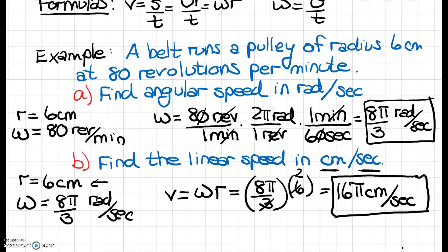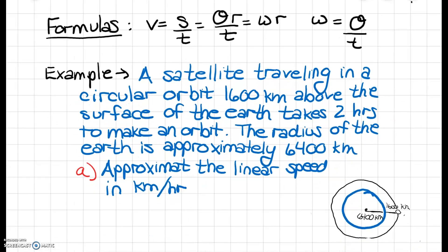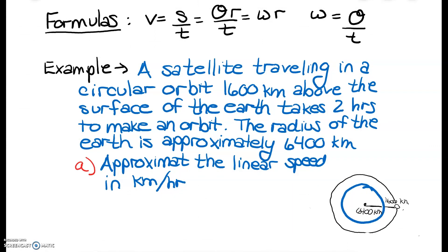Let's move on to our next example — we have three more examples in this video. It says a satellite traveling in a circular orbit 1600 kilometers above the surface of the Earth takes two hours to make an orbit. The radius of the Earth is approximately 6400 kilometers. I drew a picture: the blue circle is the Earth with a radius of 6400 kilometers, and then a small circle rotating around the Earth, 1600 kilometers above the surface.